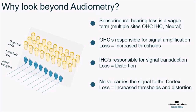Lastly, we have the nerve, whose main job is to carry the signal to the cortex. With neural losses, we get both increased thresholds and distortion. So we have certain sites causing certain clinical patterns, and we should try to get a bit more certainty on where the hearing loss lies before actually making any decision on amplification and hearing aid features.